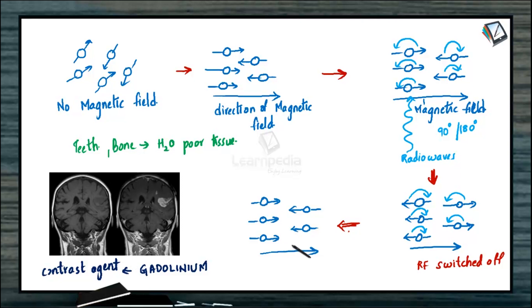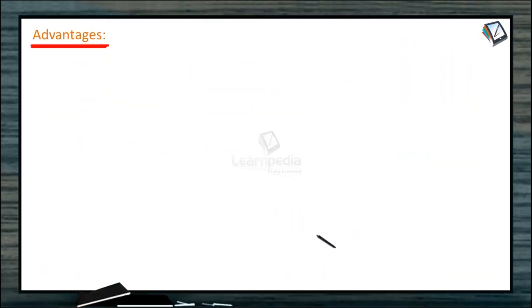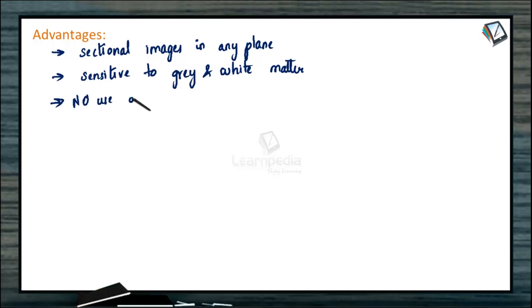Let us see the advantages and disadvantages of MRI. What are the advantages of MRI over the CT scan? One thing is that it can produce sectional images in any plane for any kind of body part, whereas the CT scan is mostly restricted to cross sectional images. The MRI is more sensitive to grey and white matter. And there is no use of any kind of ionizing radiation, so it does not cause any kind of health hazard.